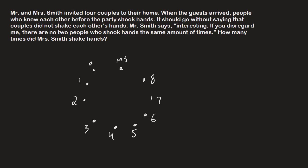Now, disregarding Mr. Smith, we have 9 other people who shook hands a completely different number of times, and we've covered each possible value. Let's draw some lines between these dots to show people who shook hands. Let's look at person 8 — they shook hands with 8 different people. We know they didn't shake hands with person 0, because person 0 shook hands with 0 people. So person 8 shook hands with persons 1, 2, 3, 4, 5, 6, 7, and Mr. Smith — that's 8 people.